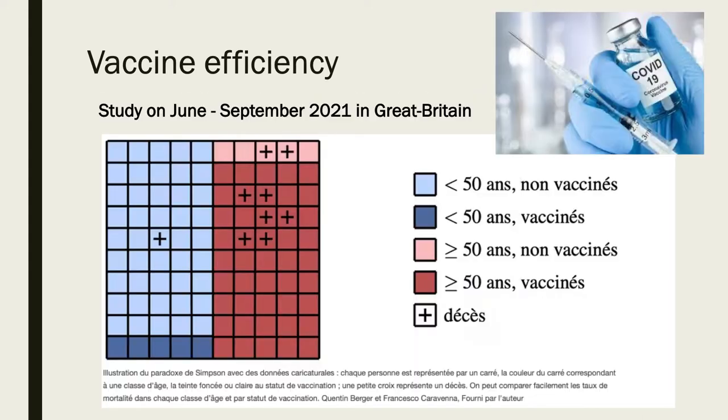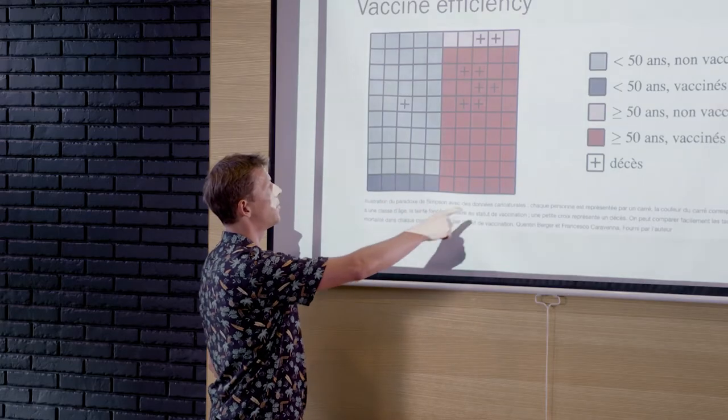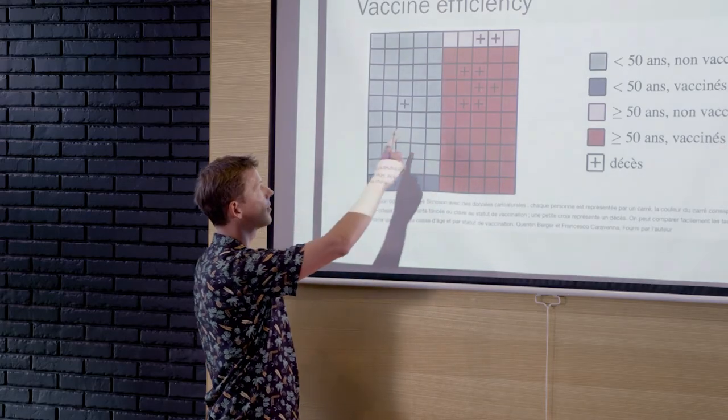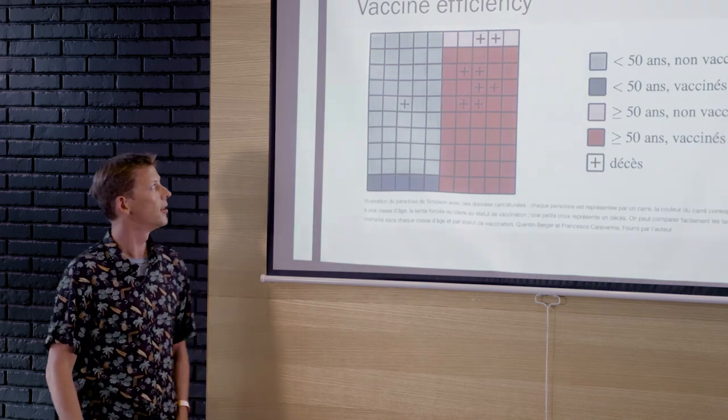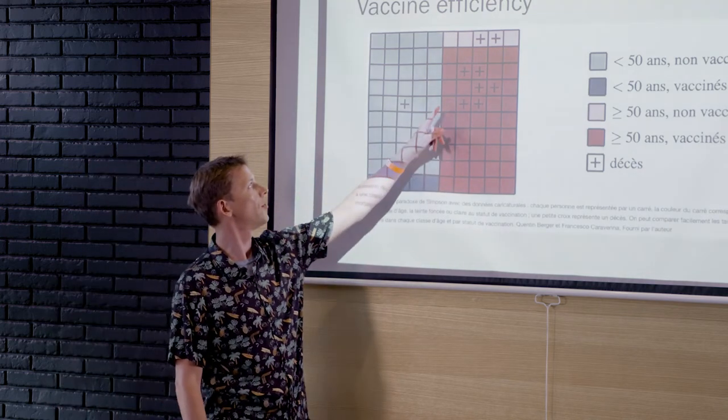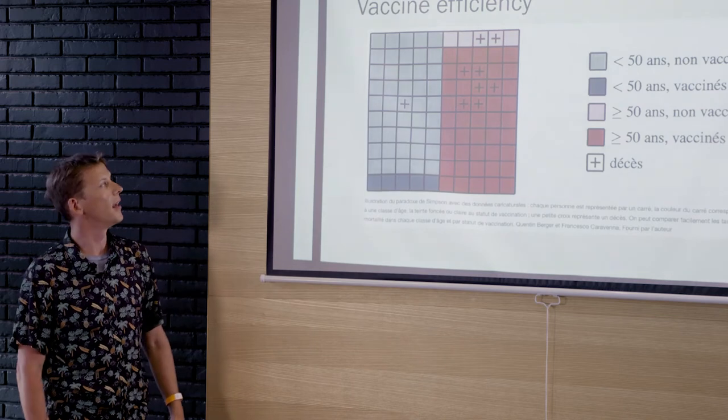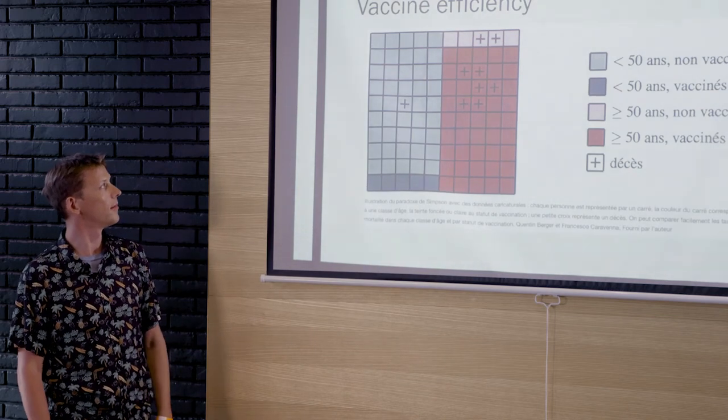Okay, so let's look at all the vaccinated people. So all the vaccinated people is all the dark squares here. You have one, two, three, four, five, six crosses, right? And in the light area, you have only three crosses. So you have more crosses among the vaccinated people than among the non-vaccinated people, okay? So it means the vaccine is bad for you, right? Totally the opposite of what we were saying before.